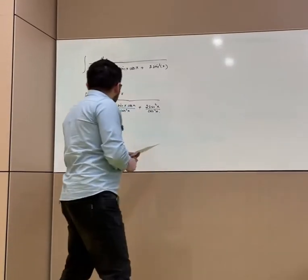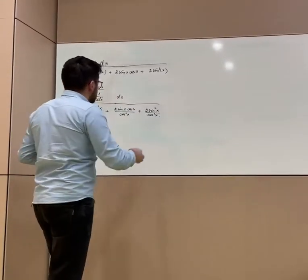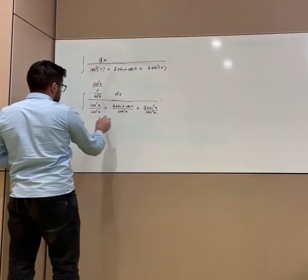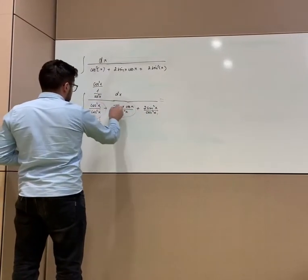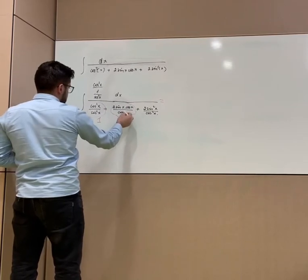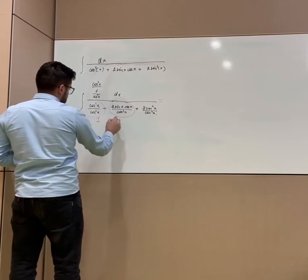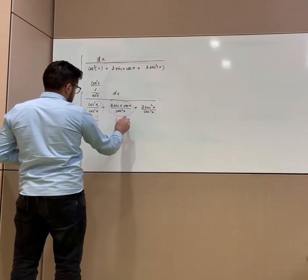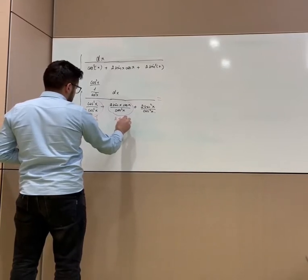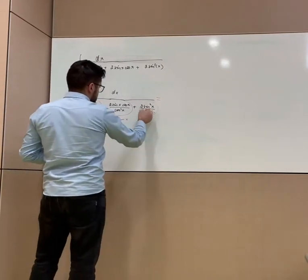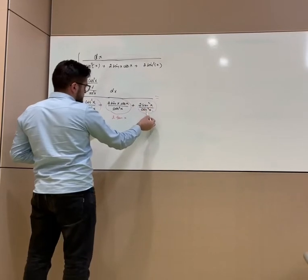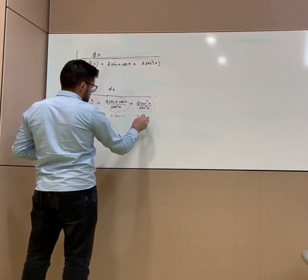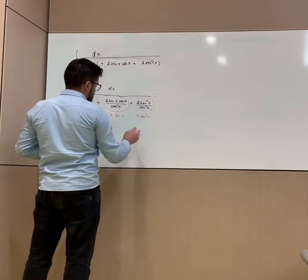We know that cosine squared x over cosine squared x will give me 1, this part will give me 2 tangent x, and sine squared x over cosine squared x will give me 2 tangent squared x.